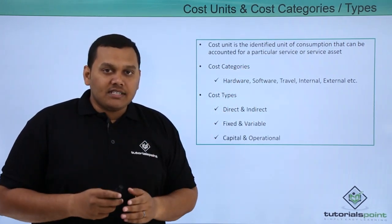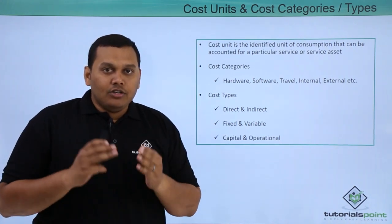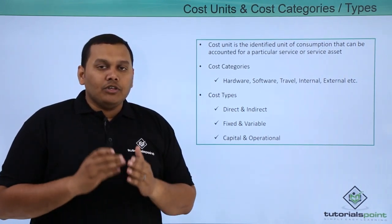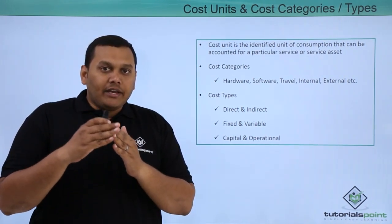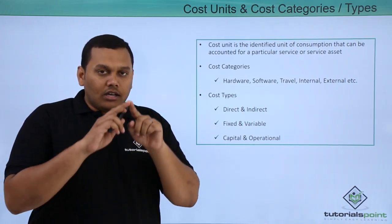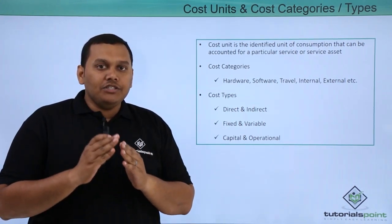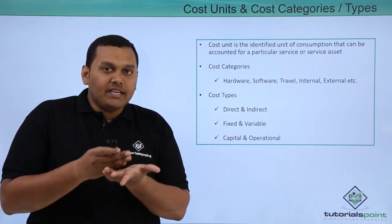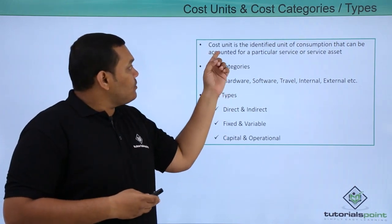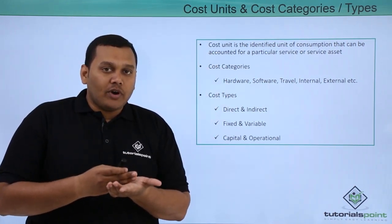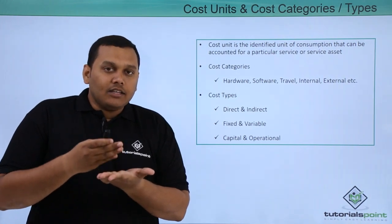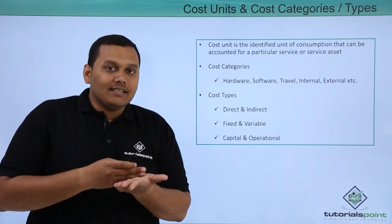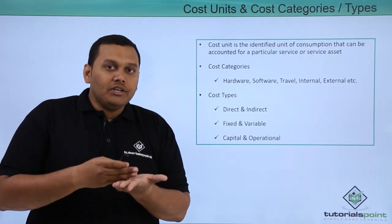Regarding cost unit, we will be discussing about an example here. If you take an organization which is looking for Microsoft Outlook software, here Microsoft Outlook is an entity or a software package. For the software package, cost per unit means licenses — how many licenses the company is looking for depends upon the cost per unit. If the cost quoted by the service provider is high, then the cost per unit depends upon the licenses. So if a company is looking for 10 licenses, cost per unit will vary.